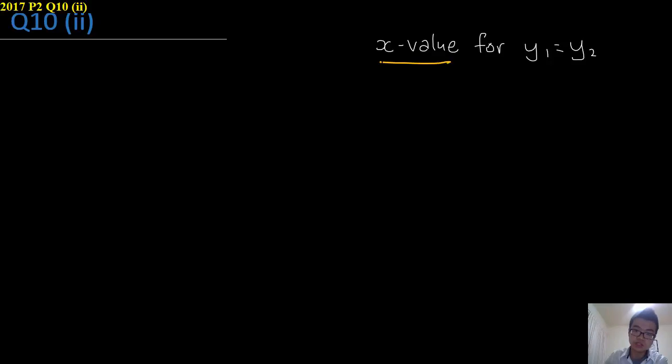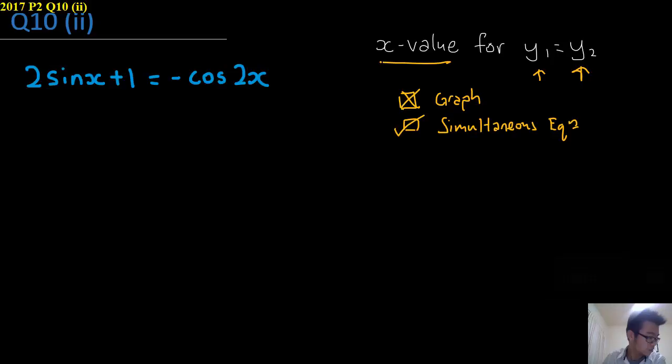Then part 2 is straightforward, asking you for x-value when you substitute y1 and y2 together. So straight away you can't use graph but you can use simultaneous equation. Straight substitution, this is your y1, here's your y2. I'm going to forget 0 less than x less than 360 degrees.